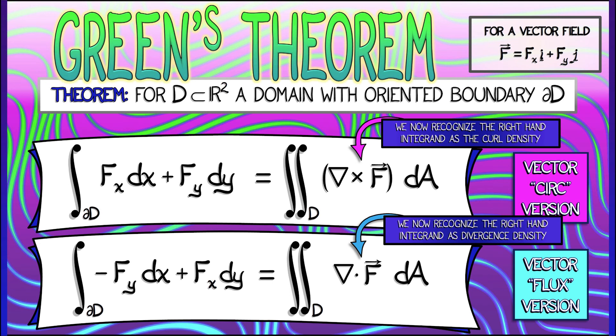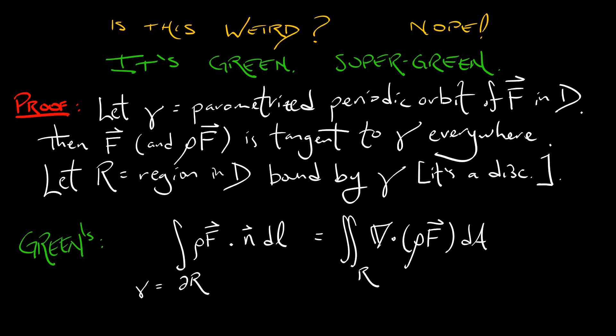This is the flux form of Green's theorem, which you may remember from your multivariable calculus course. Now, because gamma is a periodic orbit and tangent to the vector field, how much flux is going across gamma? None. Zero. No flux.